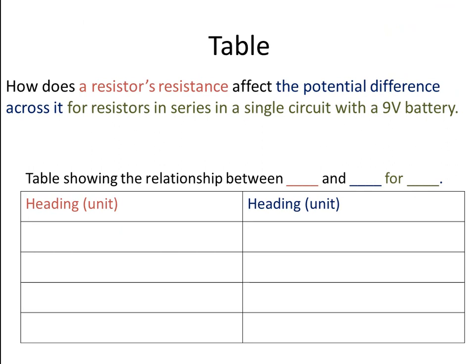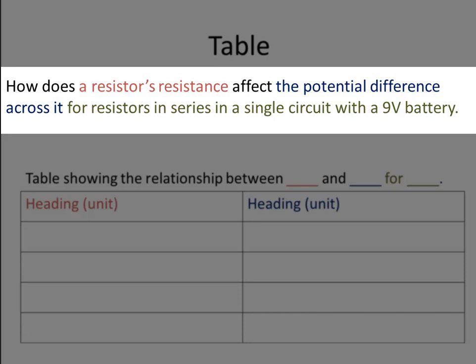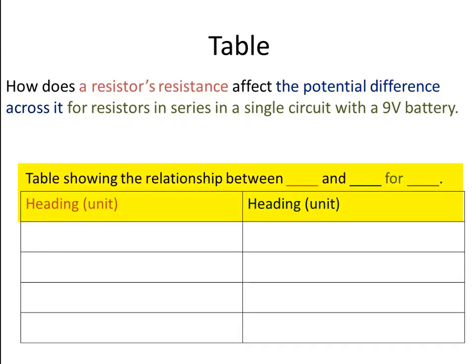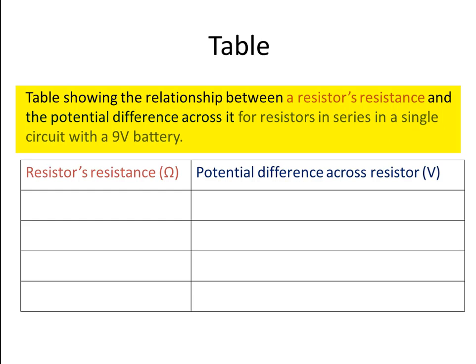Let's prepare a table so we're ready to put our data in when we get it. Our question is: how does a resistor's resistance affect the potential difference across it for resistors in series in a single circuit with a 9 volt battery? Resistor's resistance is our independent variable; potential difference is our dependent variable. The table heading is: 'Table showing the relationship between a resistor's resistance and the potential difference across it for resistors in series in a single circuit with a 9 volt battery.' First column heading: resistor's resistance, unit ohms. Second column: potential difference across the resistor, unit volts.